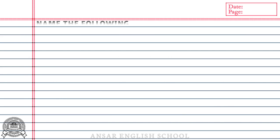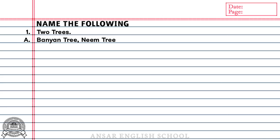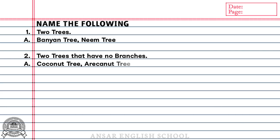Name the following. Number 1: 2 trees. Answer: Banyan tree, Neem tree. Number 2: 2 trees that have no branches. Answer: Coconut tree.